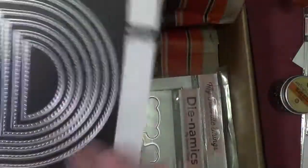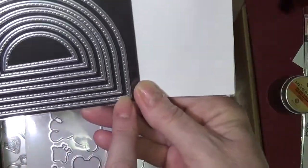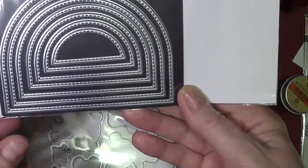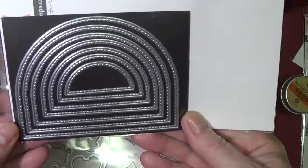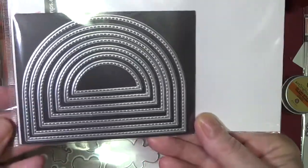And this is called Stitch Dome Stacks. So I think this is really nice. It's stitched on the inside of the cut line, so it'll be really nice to have a different shape than just squares, rectangles, ovals, circles.